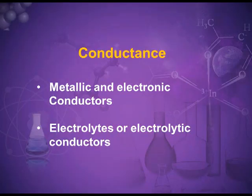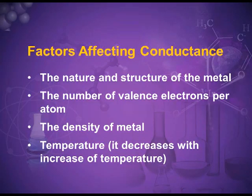The metallic conductors means the metals. They allow the current to pass through them due to the flow of electrons without undergoing any chemical change. The electrons move out from one end and they enter through the other end — there is no chemical change that takes place in the metal. Factors affecting metallic conductors: the nature and structure of the metal, the number of valence electrons per atom, the density of the metal, and temperature. The metallic conductance decreases with increase of temperature.